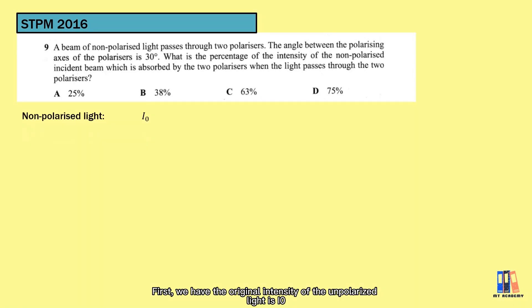First, we have the original intensity of the unpolarized light is I₀. After passing through the first polarizer, the vibration of the wave is limited to one plane only, where the perpendicular component is absorbed by the polarizer. Hence, the intensity is half where I₁ is equal to ½I₀.